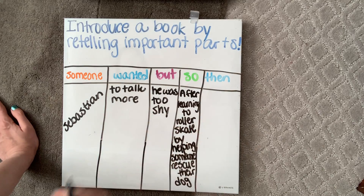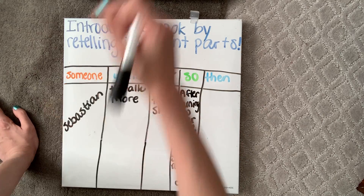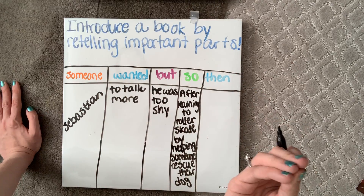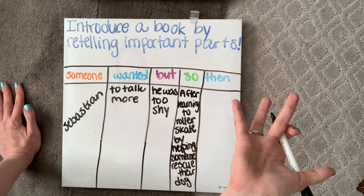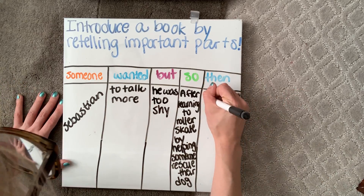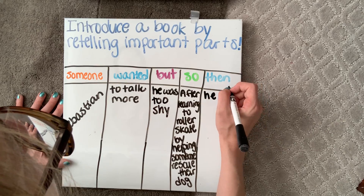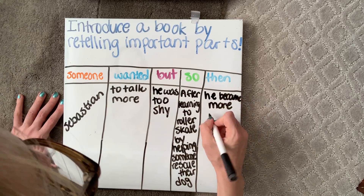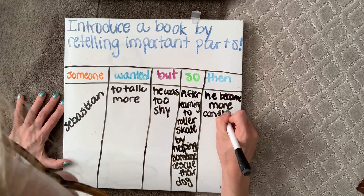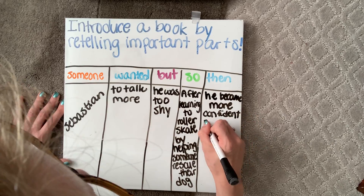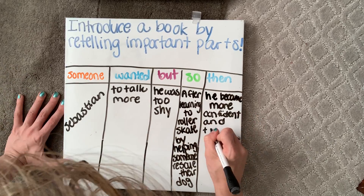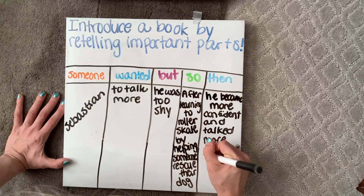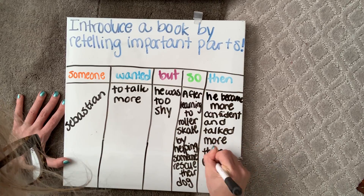And finally, we have then. This is the resolution of our story — what happens at the end that ties our book up in a nice, pretty bow and solves our problems. So at the end, what happened to Sebastian? He became more confident, right? So I'm going to put 'he became more confident and talked more than ever.'